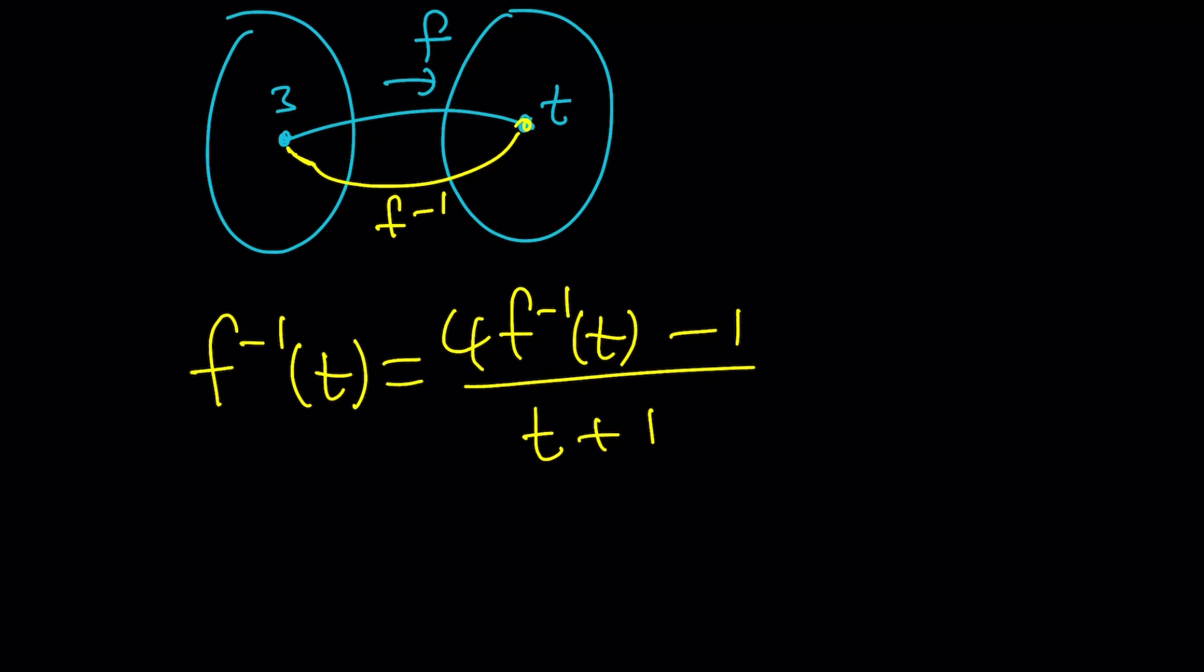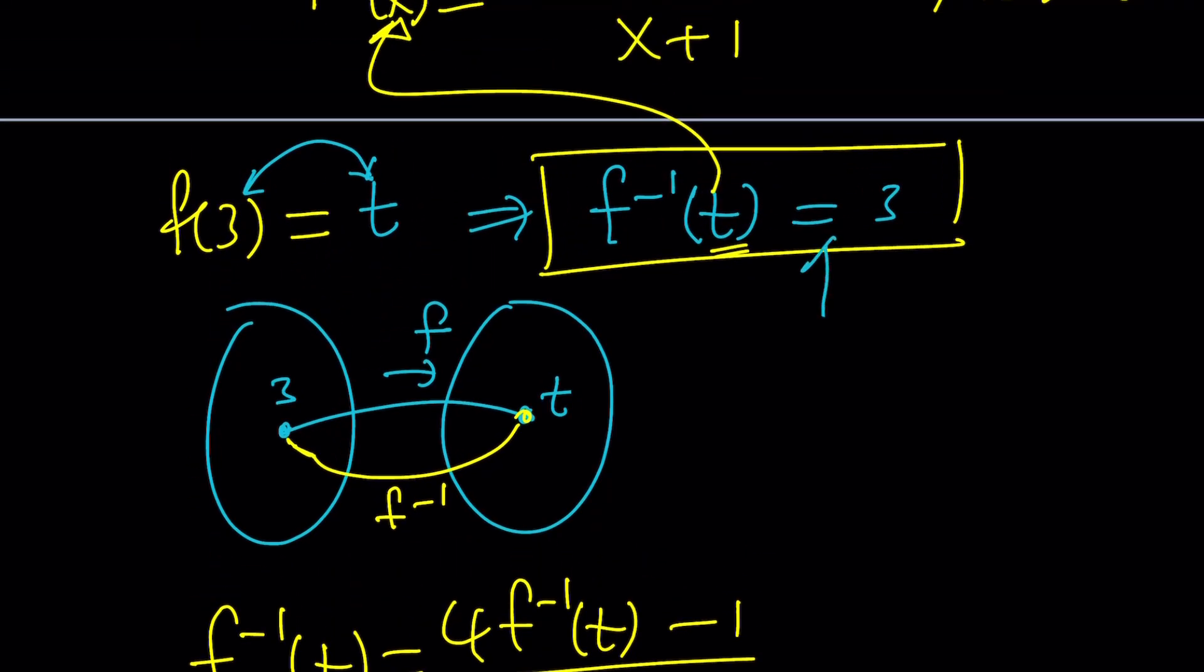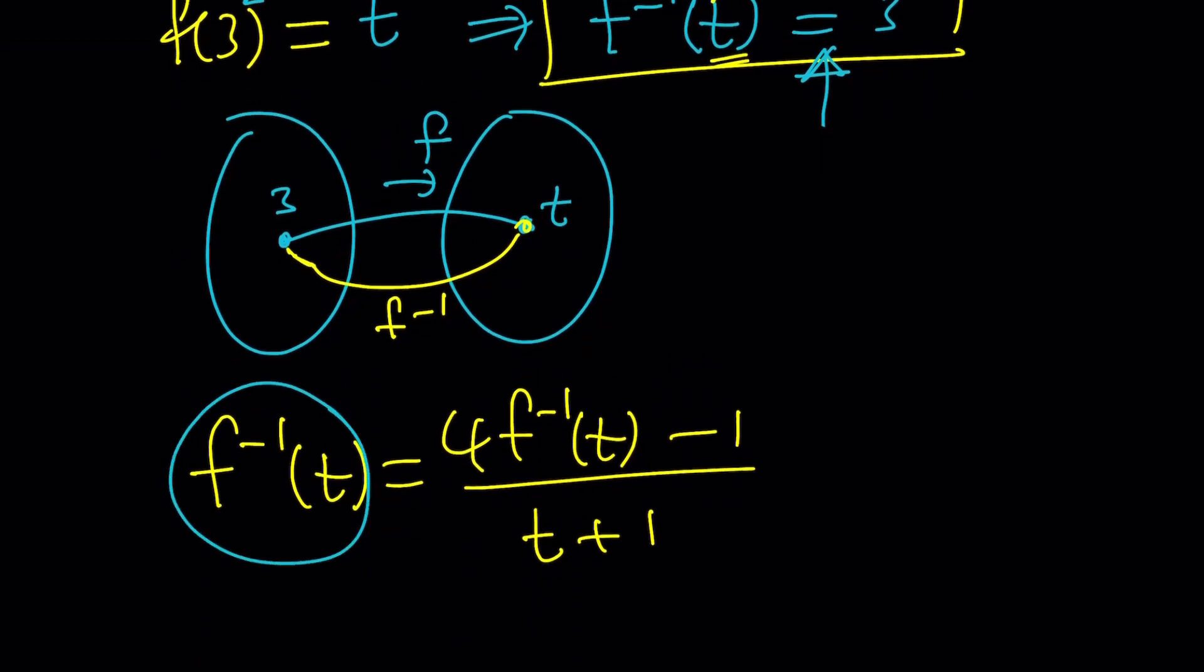So you might be kind of wondering, like, isn't this more complicated? Like there are two variables. There seem to be two variables, but actually that's not the case because we know what f inverse t is, right? That is equal to 3. So this is a 3, and that's a 3. Make sense?